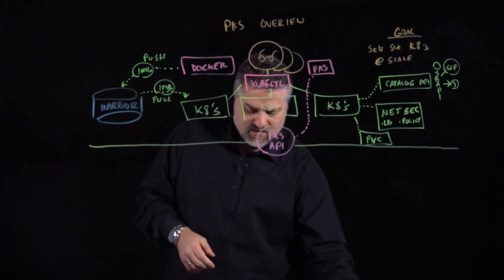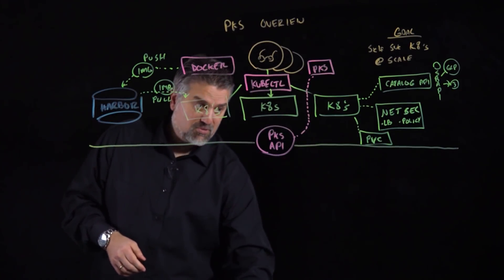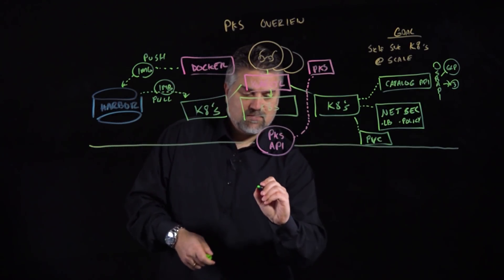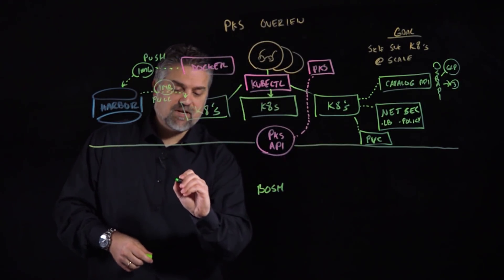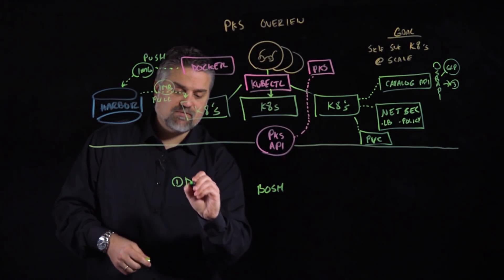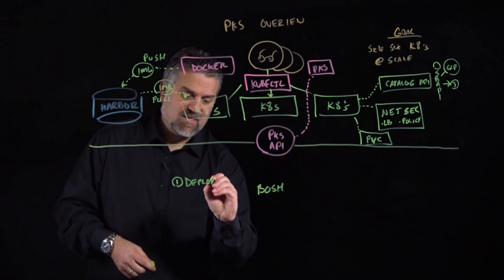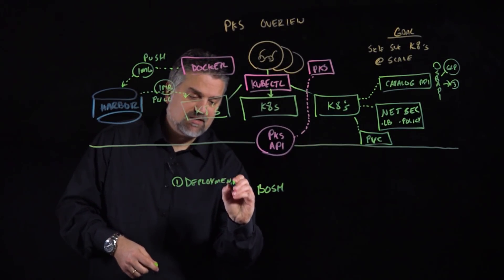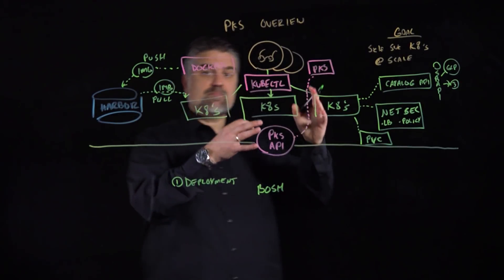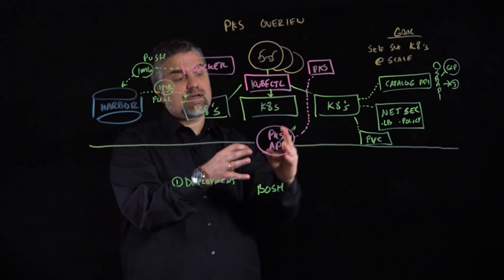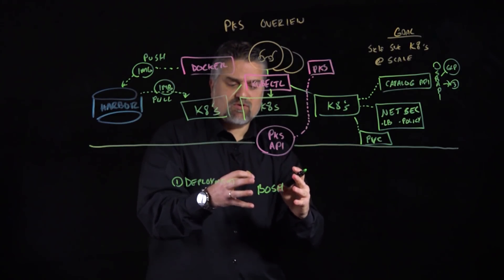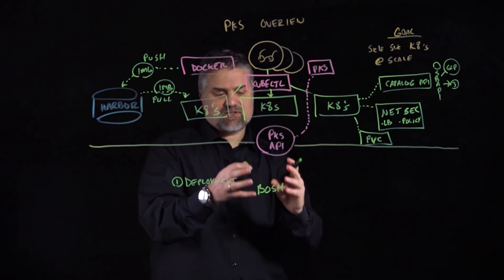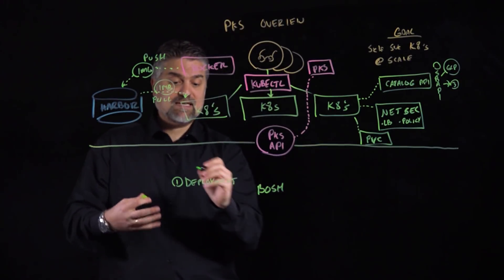The PKS API interacts with a component we call Bosh. And Bosh does a very important day one capability for us. It offers a deployment mechanism. So when a development team makes a request to that PKS API, that API is going to build something for us. It's going to build us a manifest and it's going to work with Bosh to make sure that we deploy instances.